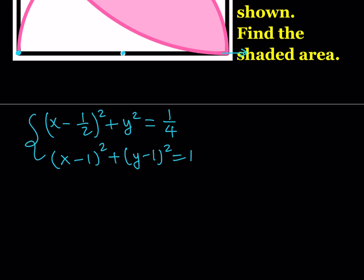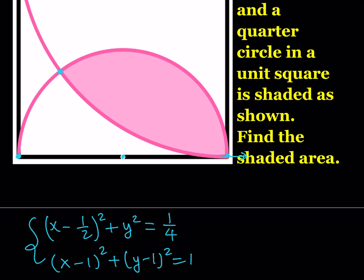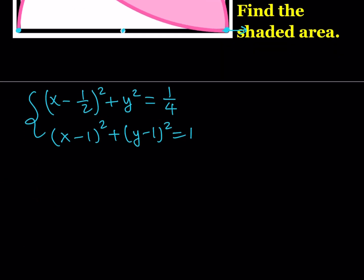These two curves intersect at two points, one of them being (1, 0), which will be trivial. To solve the system, I want to subtract the smaller equation from the larger to eliminate the quadratics and get a positive result. Expanding the larger: x² − 2x + 1 + y² − 2y + 1, then subtracting the first equation: x² − x + 1/4 + y².